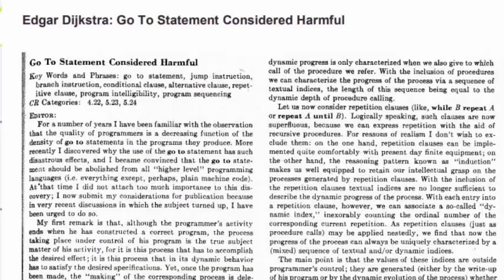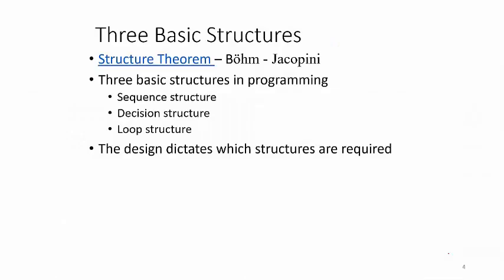One of the computer scientists named Edgar Dijkstra wrote about this and said the solution was this concept of structured programming. In about 1963-1964, Bohm and Jacopini, some mathematicians, came up with a structure theorem. They did a mathematical proof that three basic structures were what you needed in programming and could do programming without all the go-tos that were causing the spaghetti code.